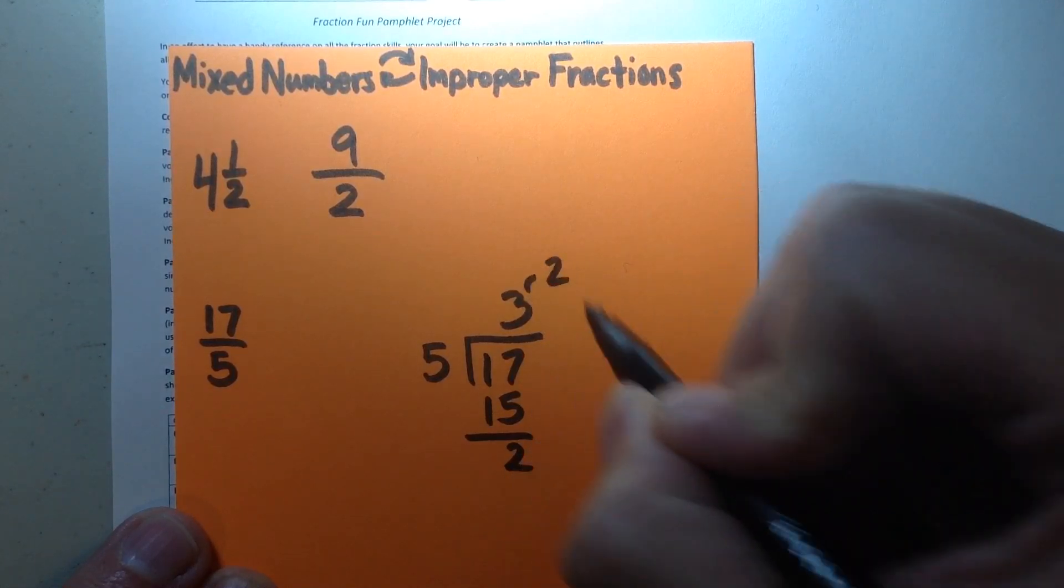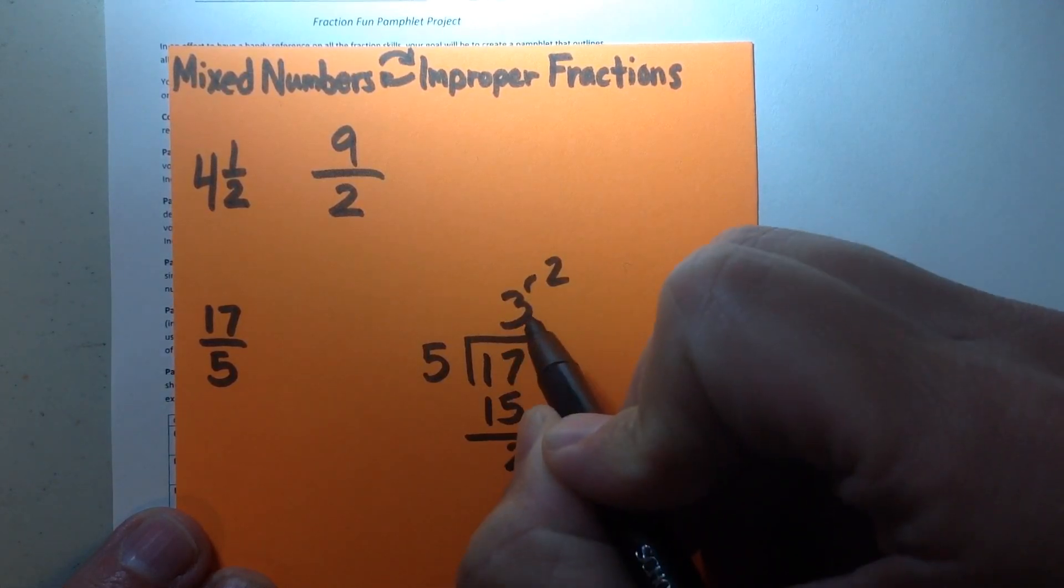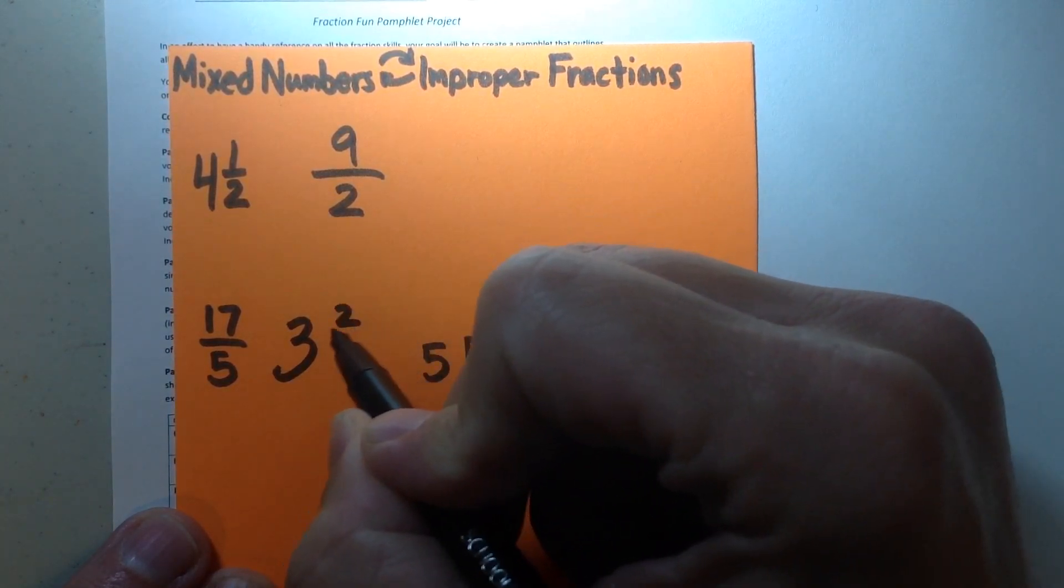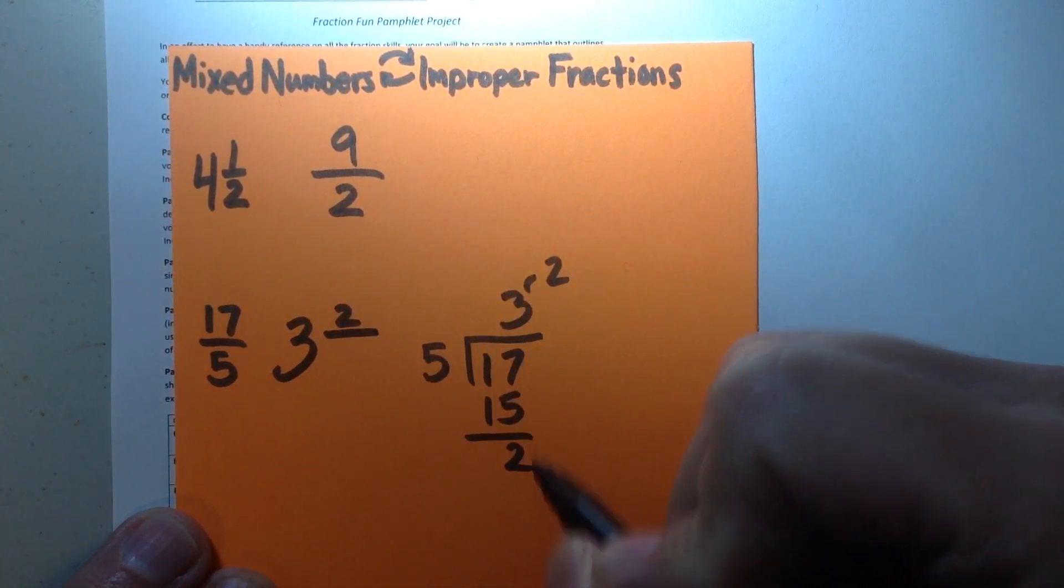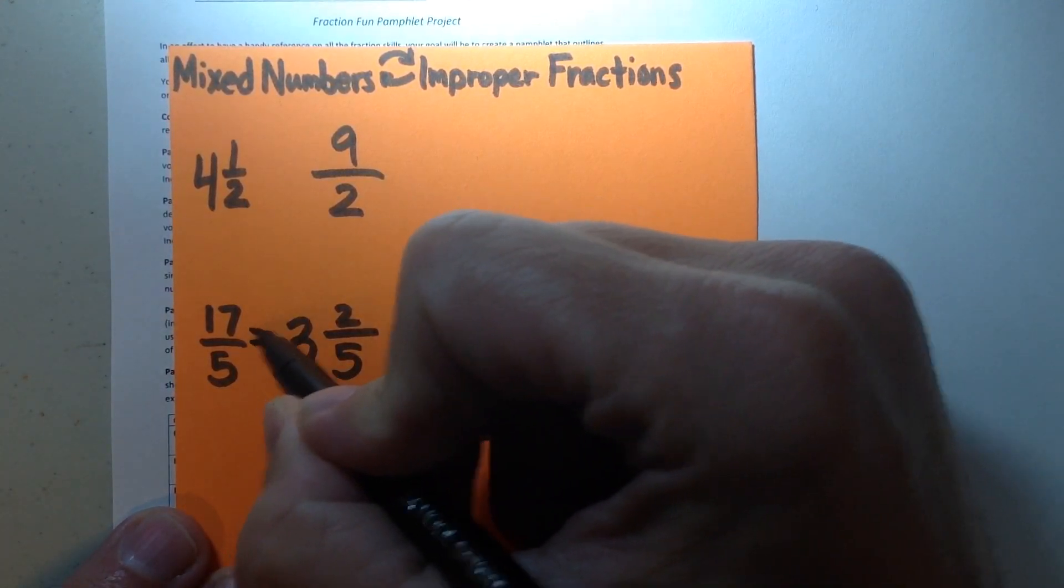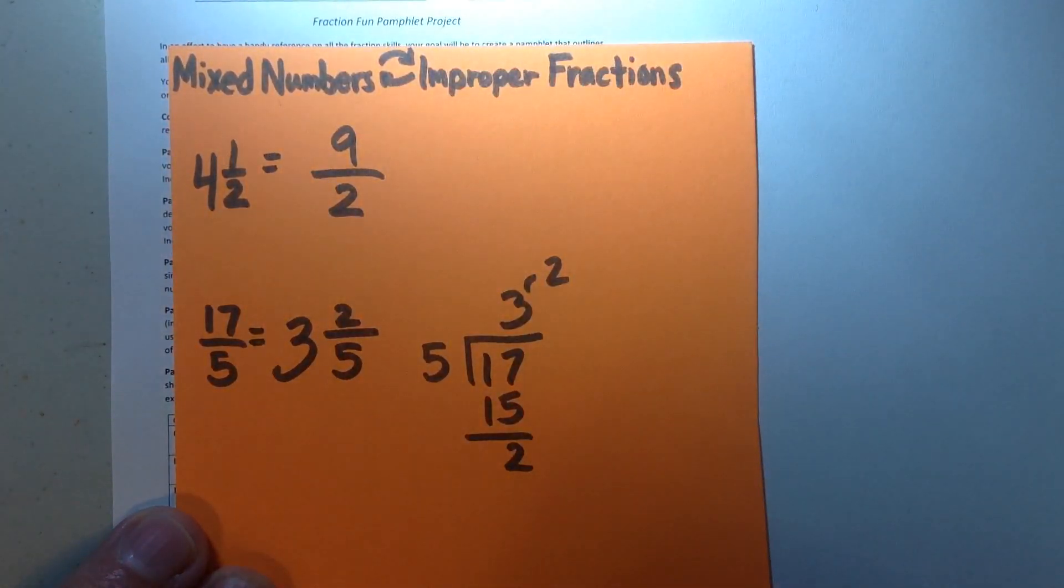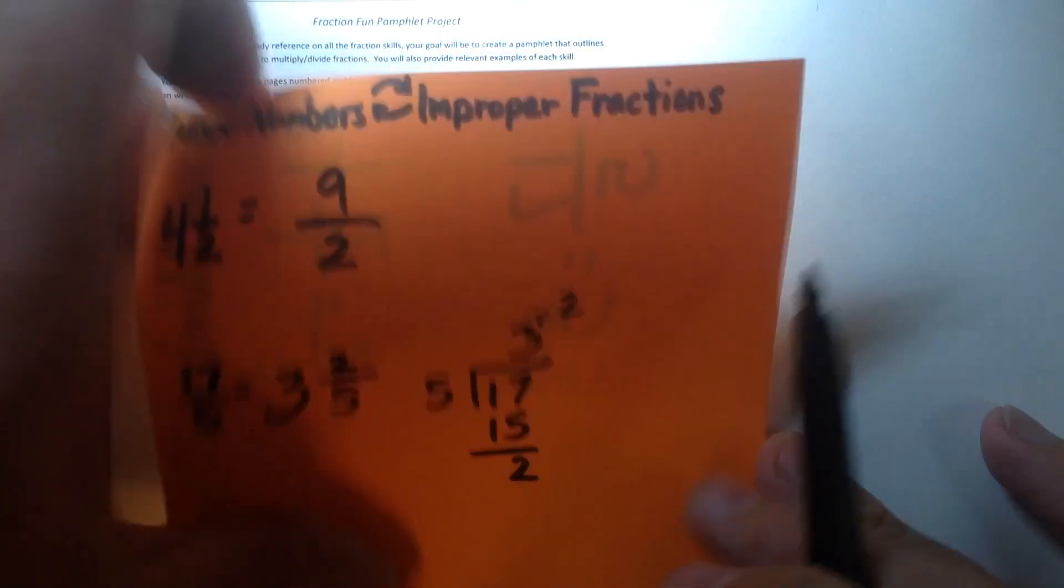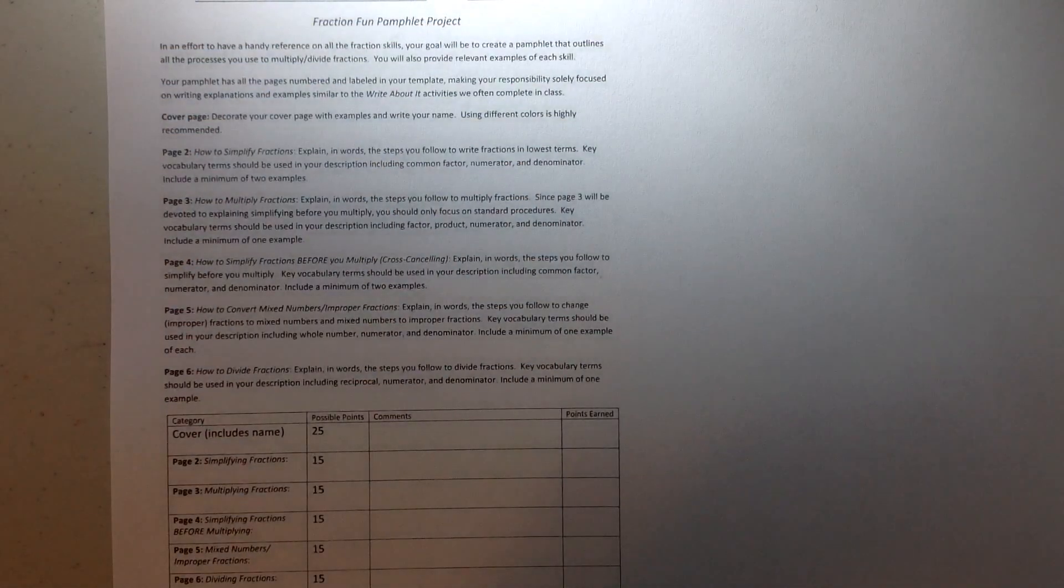Now, I like to write it as 3 remainder 2, but I know that my quotient 3 is my whole number. My remainder 2 is my new numerator, and my denominator, it stays the same. And so there's my equivalent mixed number for my improper fraction. And again, all the words I just said, I'd want to write those out to explain myself to meet the goals of this project.